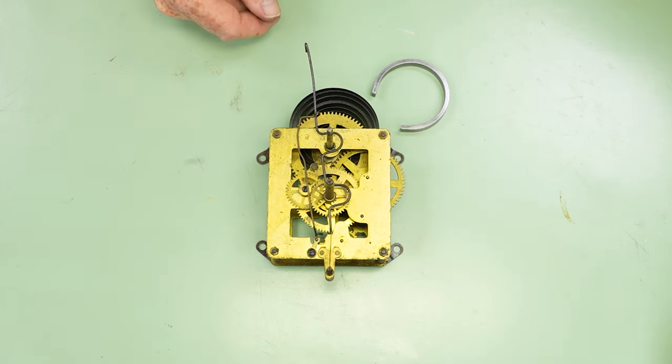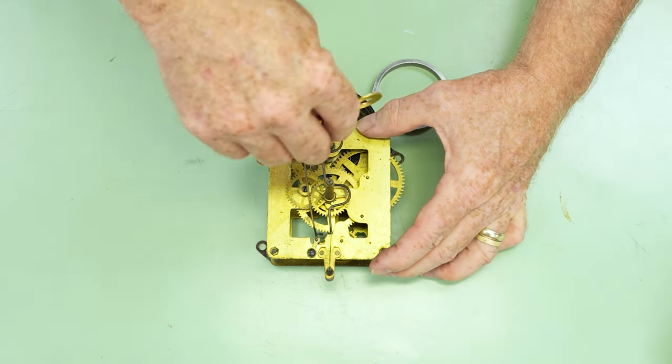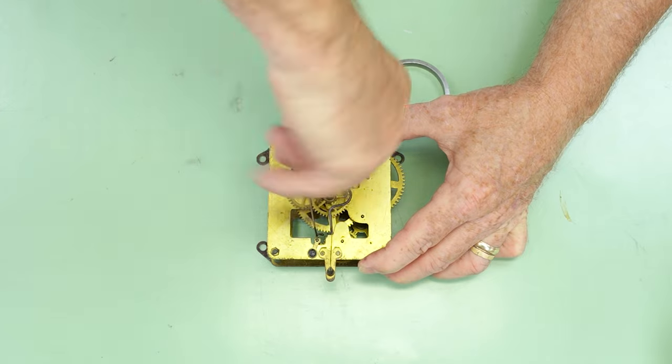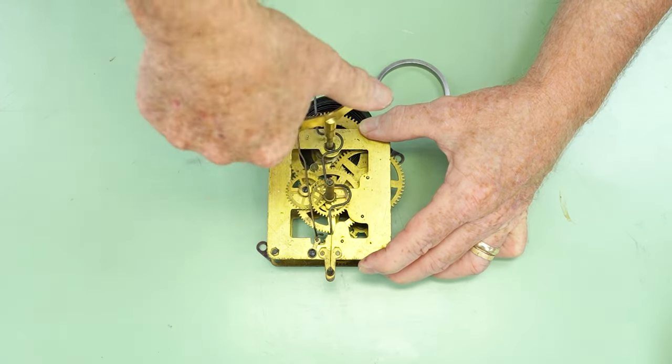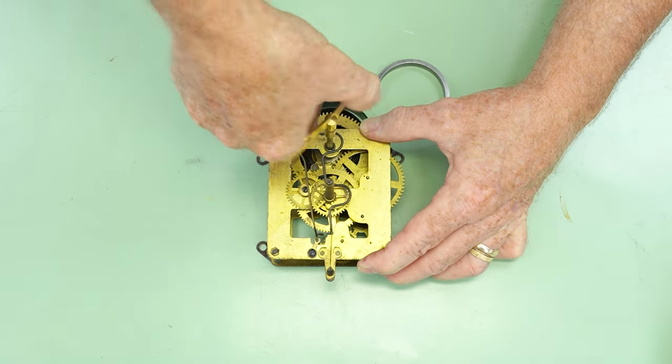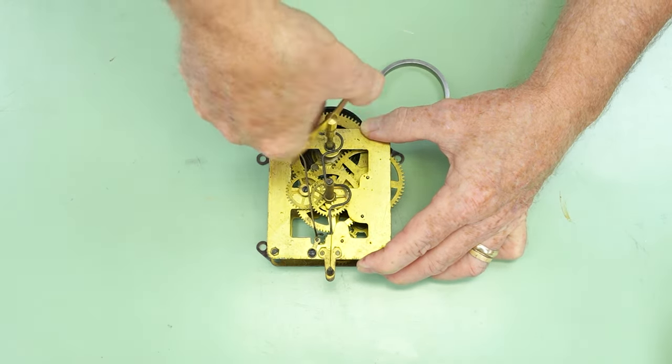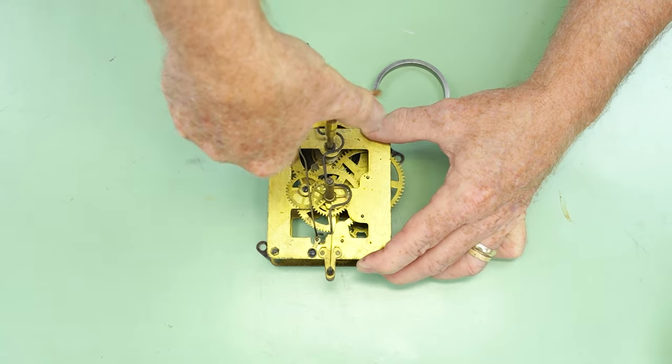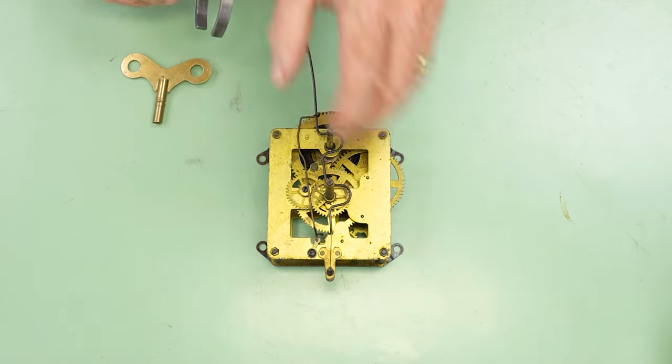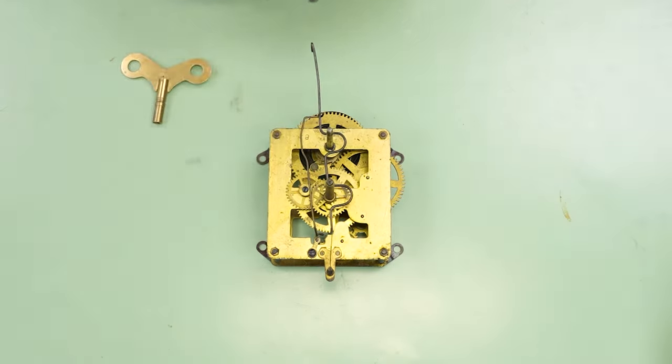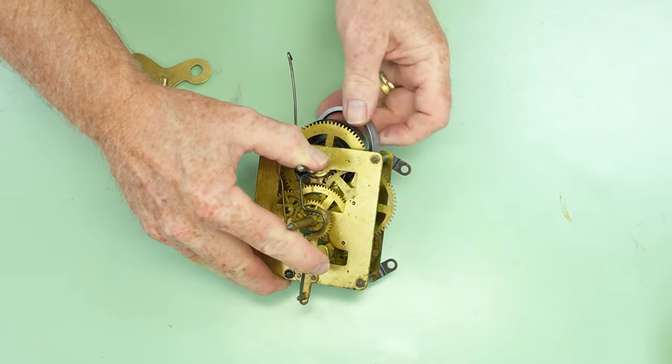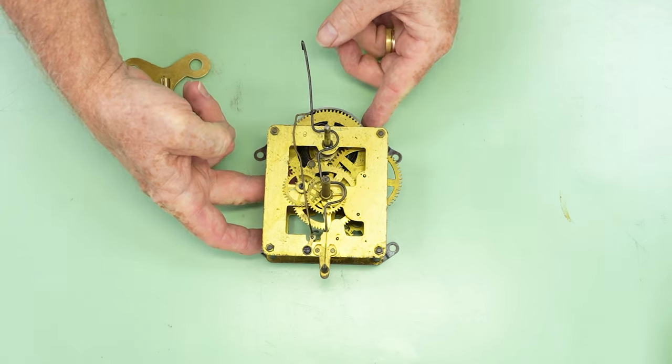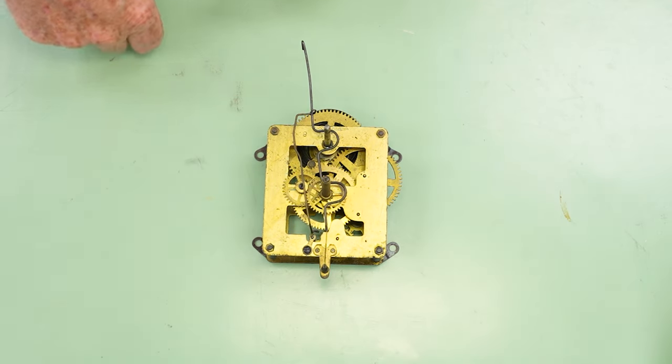So in order to do that, I'm going to need to wind this mainspring up. I'll use the key that came with the movement. See it's starting to close in on itself. I need to be at least three quarters of the way, sometimes a little bit more, in order to put that mainspring clamp on. So let's see how this works now.